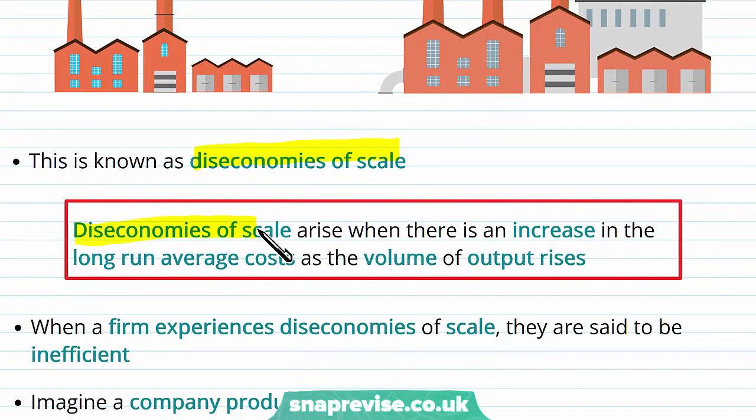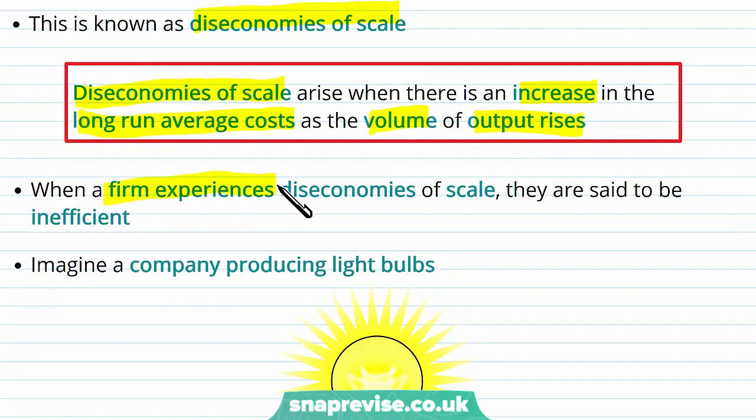Diseconomies of scale arise when there is an increase in the long run average cost as the volume of output rises. When a firm experiences diseconomies of scale, they are said to be inefficient.